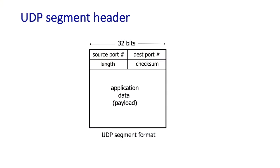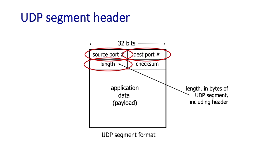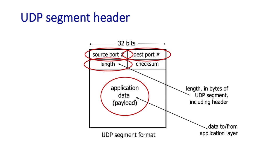It's admittedly a bit boring to look at packet formats, but like eating vegetables, it's actually good for you — there are a lot of ideas and principles behind each header field. The UDP segment format is pretty simple with only four header fields: a source port number field and a destination port number field used for multiplexing and demultiplexing; a length field, needed because the application data payload can be variable length so UDP needs to know exactly how long the segment is; and finally a checksum field.